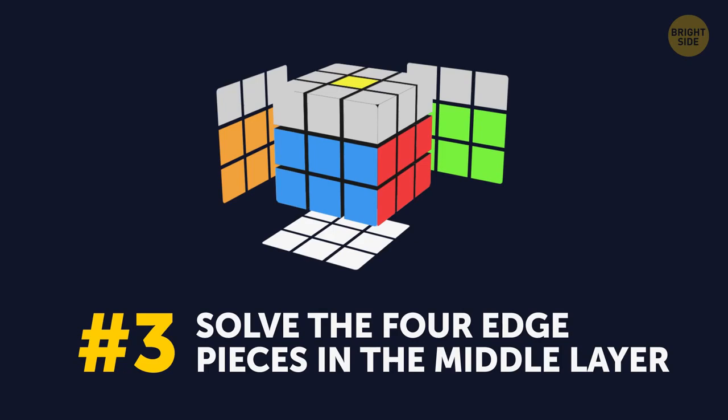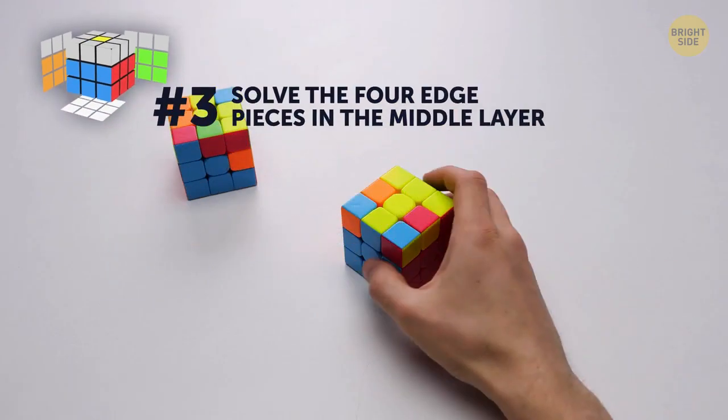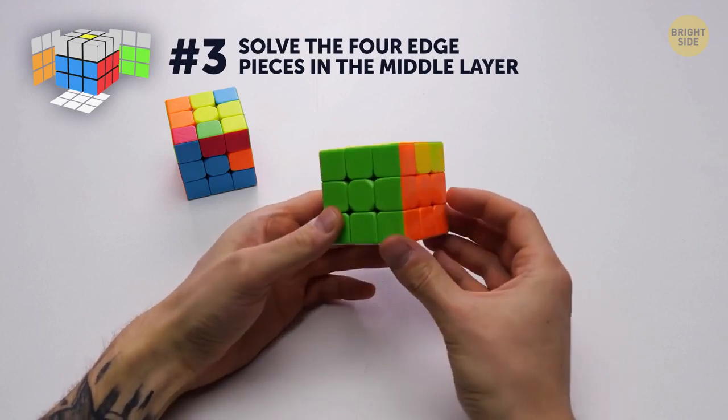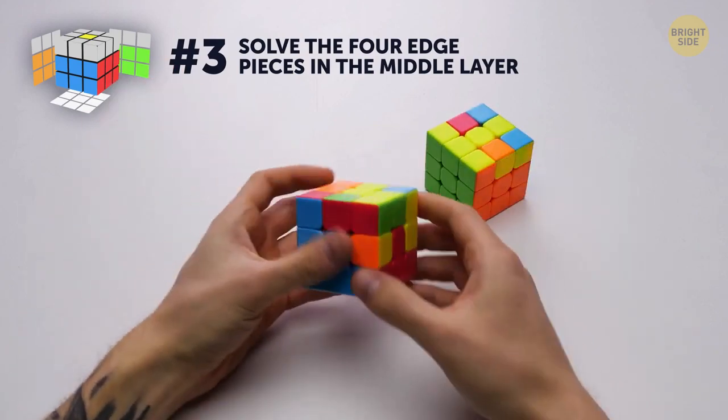Number 3. Solve the four edge pieces in the middle layer. At this stage, you'll need to solve the rest of the middle layer so that the outer blocks are the same color as the center.